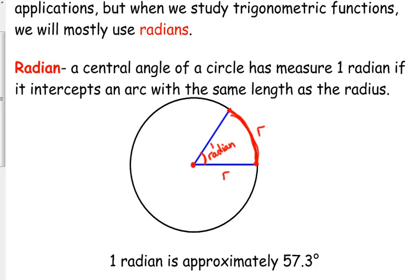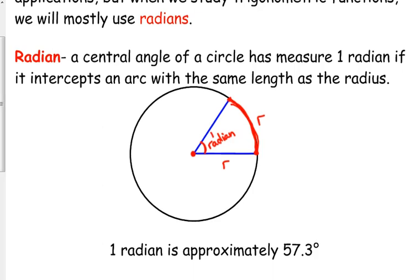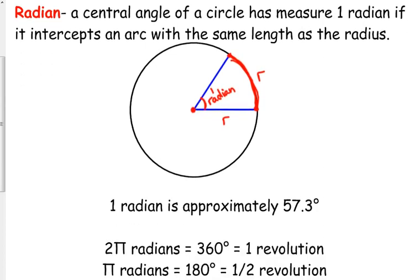Now, it doesn't matter how big the circle is. I could make as big of a circle as I wanted, or as small of a circle as I wanted. The ratio still exists between the radius and that arc, so a radian is a standard unit of measure, regardless of the size of your circle.